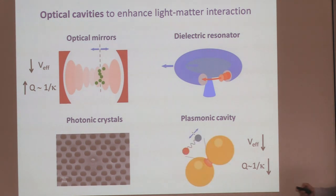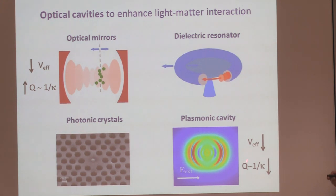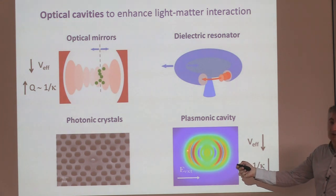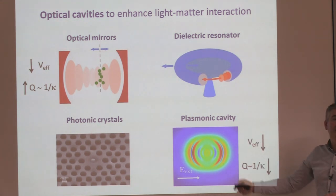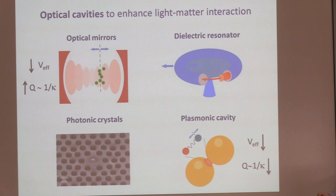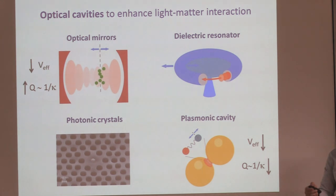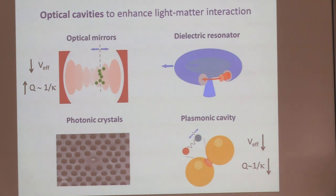We call it a plasmonic cavity because it's an actual physical cavity — a nanoscale optical resonator. Sometimes in plasmonics you don't even need the cavity: a simple spherical particle also oscillates with collective electron motion and produces a resonator. In that case, people talk about a plasmonic antenna. So a plasmonic nano-cavity and a plasmonic nano-antenna are the same thing — just a trapper of light at the nanoscale.